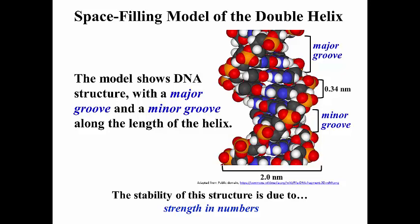The stability of this structure is due to strength in numbers. It's the number of hydrogen bonds up and down the length of chains with tens of thousands of nucleotides that gives a double helix its tremendous stability.